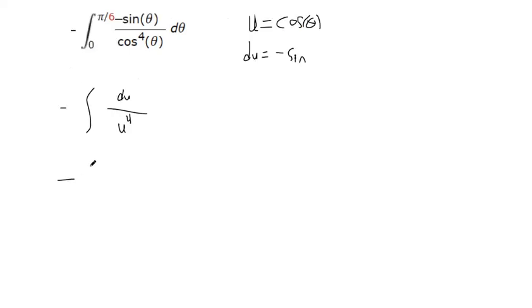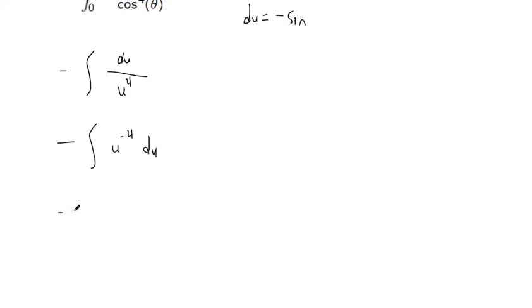And so that's asking us to find the antiderivative of u to the negative fourth. So when we find an antiderivative, it's the reverse of the derivative. So the power goes up by one.